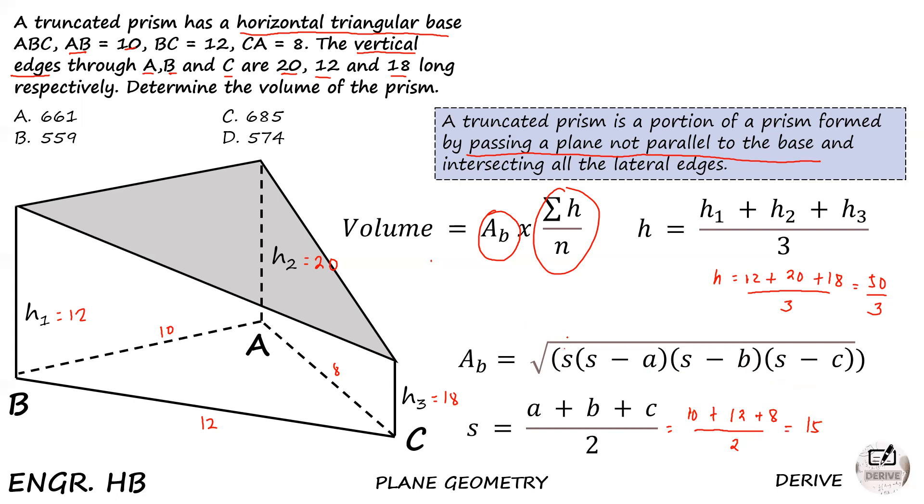Now we substitute into the area formula. It becomes square root of 15 times 15 minus 10, times 15 minus 12, times 15 minus 8. Calculating: 15 minus 10 equals 5, 15 minus 12 equals 3, and 15 minus 8 equals 7. The answer is 39.7, which is the area of the base.